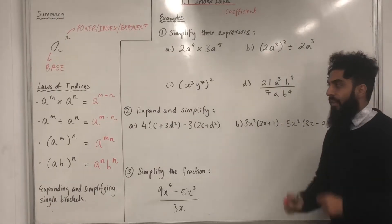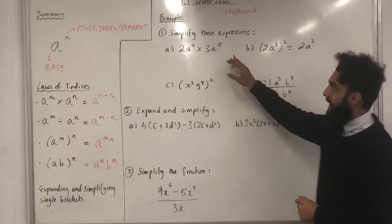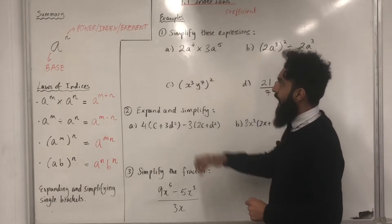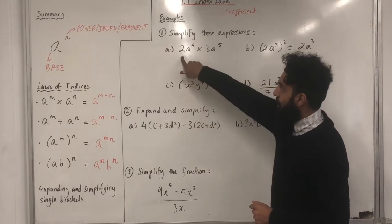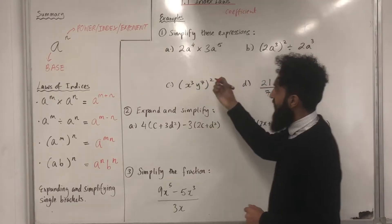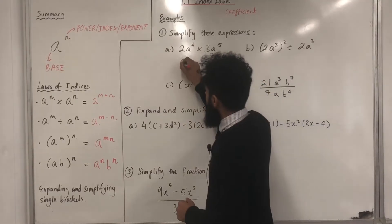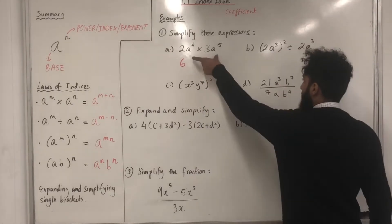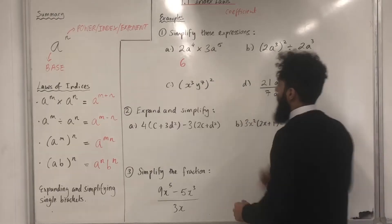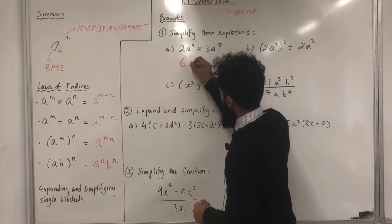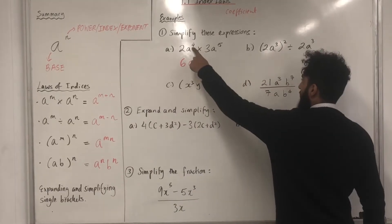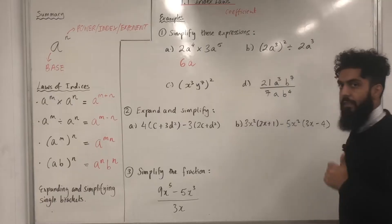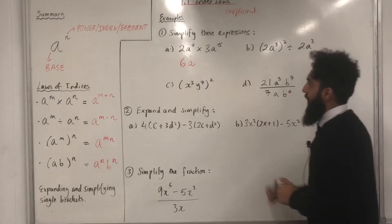Let's simplify this particular expression. The first step is to multiply 2 by 3, which is 6. We have the same base, we can write A. Because we're multiplying, we add the powers, so 4 plus 5 is 9.